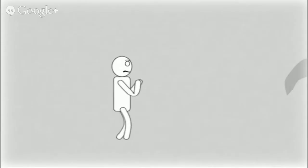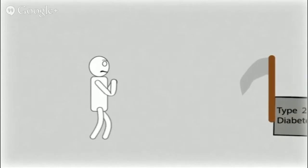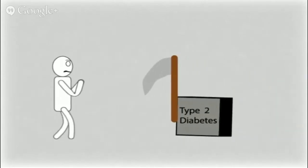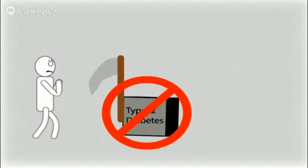If left undiagnosed, type 2 diabetes can damage your internal organs, ruin your quality of life and shorten your life expectancy. This does not have to happen to you.